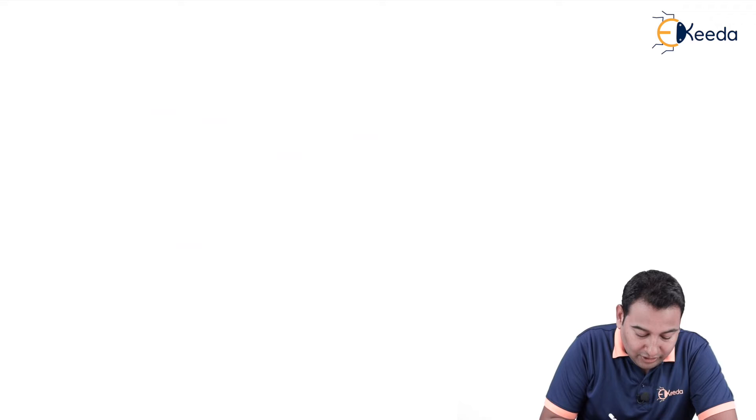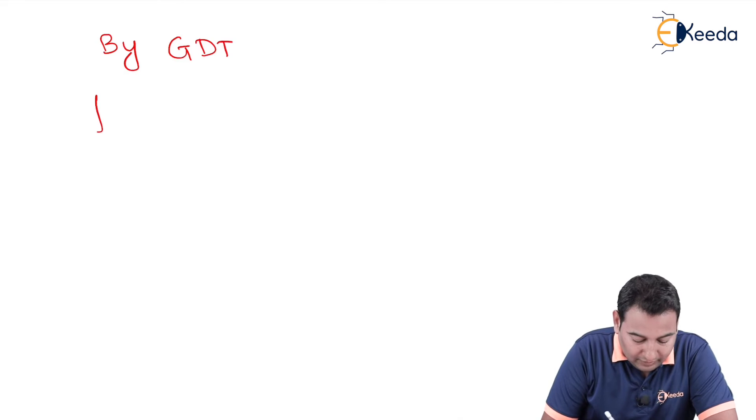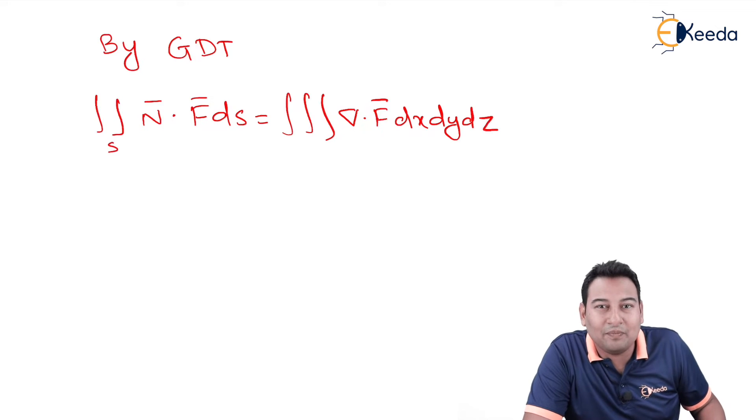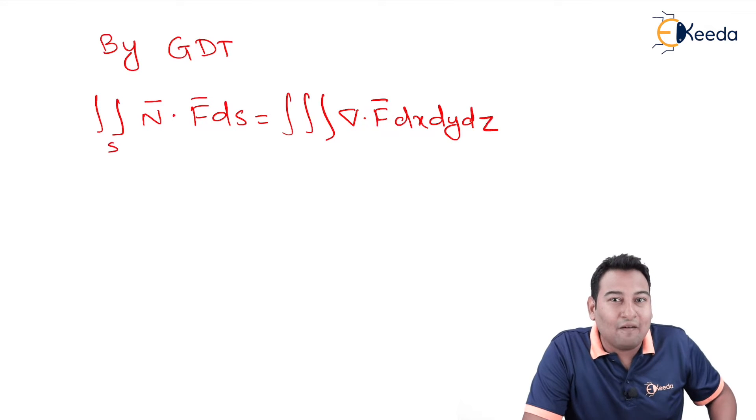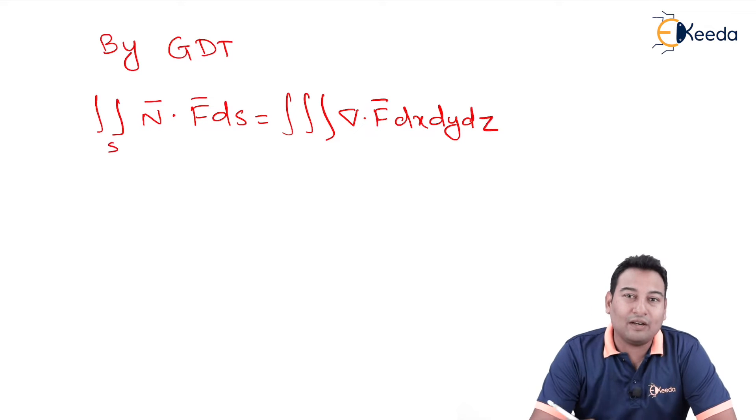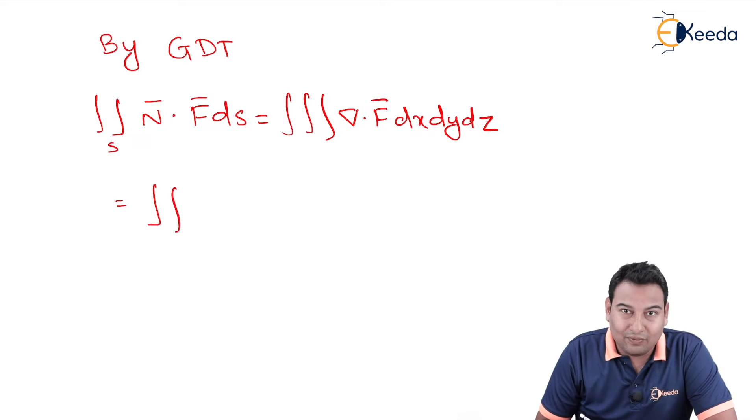Let's move on. Let's apply GDT. By Gauss Divergence Theorem, double integration S of n bar dot F bar dS equals triple integration of del dot F bar dx dy dz. Friends, remember the last problem, last two problems, in fact, cylinder, same procedure here. What we did in cylinder? We first of all evaluated z, after that we left with the double integration, we converted the problem into polar and we solved. Same story here. First of all, we need to evaluate with respect to z.